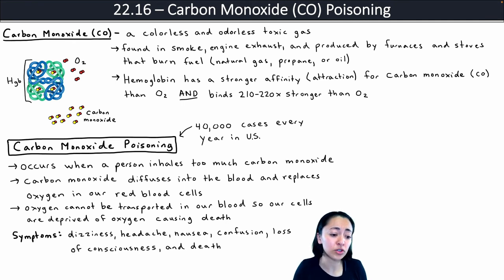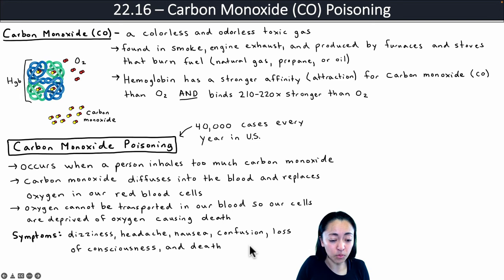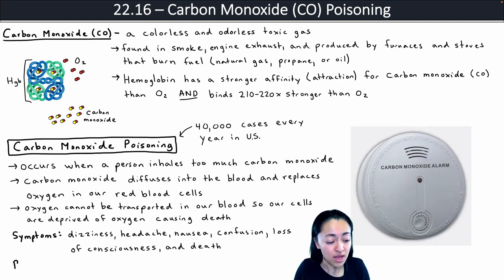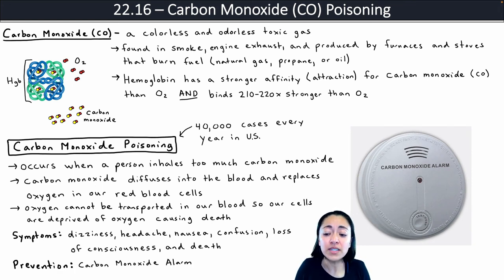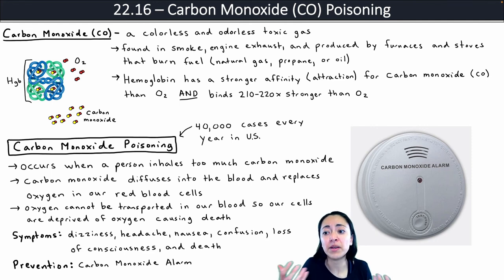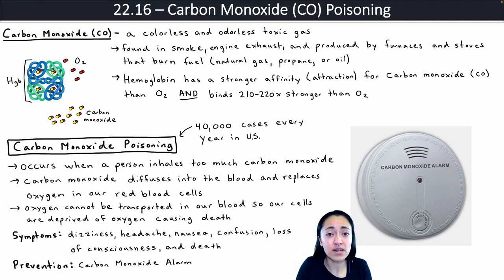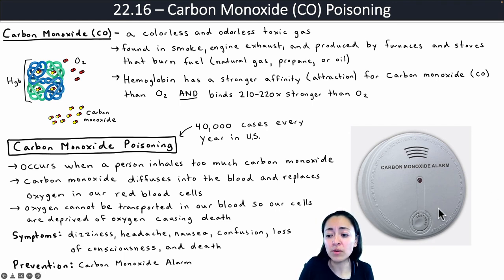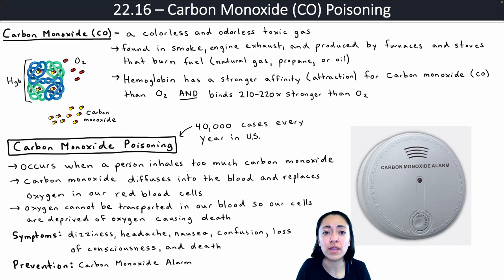The symptoms of carbon monoxide poisoning include dizziness, headache, nausea, confusion, loss of consciousness, and death. It is really important to prevent carbon monoxide poisoning in your household, and one of the best ways is to use a carbon monoxide alarm. Because carbon monoxide is colorless and odorless, people often don't notice it leaking from a furnace or stove. Many deaths happen because people are sleeping when carbon monoxide levels rise — they lose consciousness without realizing they're breathing in carbon monoxide. Carbon monoxide alarms can detect high levels and give off a high-pitched beeping sound to alert you to get out of your home.